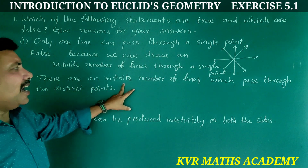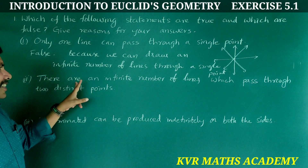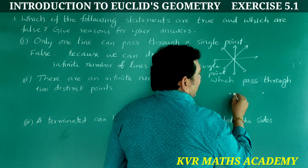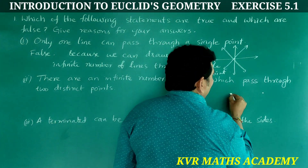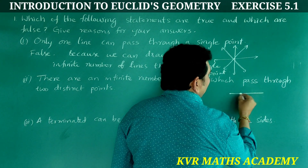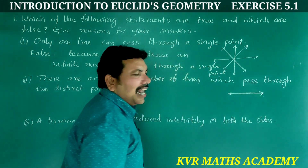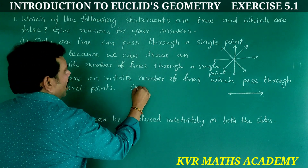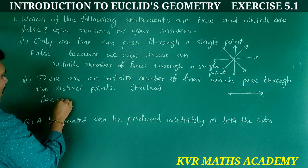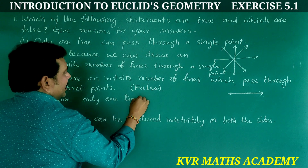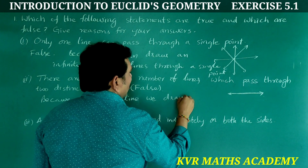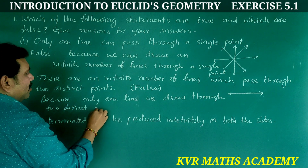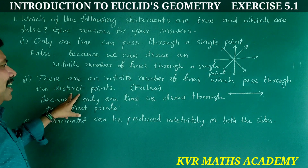Second statement: There are an infinite number of lines which pass through two distinct points. Two distinct points — how many lines can we draw? We can draw only one line through two distinct points. So the given statement is also false, because only one line can be drawn through two distinct points.